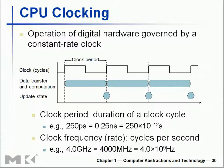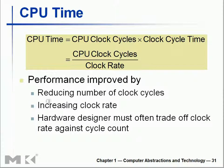Clock cycle is important. One instruction requires one clock cycle, and each cycle has its own time. CPU time equals CPU clock cycles multiplied by clock cycle time. You can also divide clock cycle time into one divided by clock rate. It's confusing right now — just write the formula down and the puzzles will come together.